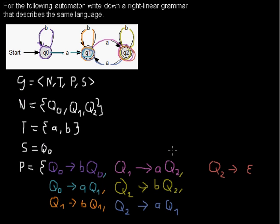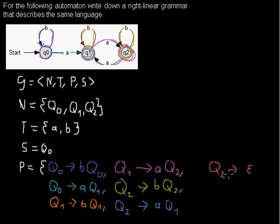One possibility is that you can add q2 → ε, expanding to the empty string. For example, if you are in q1 and you read an a and move to q2, and that a is the last symbol in your word, then you are done. Using q2 → ε achieves the same result. However, the problem with this rule is that it depends on your definition whether it is allowed in a right linear grammar, as some definitions only allow rules of the standard form.